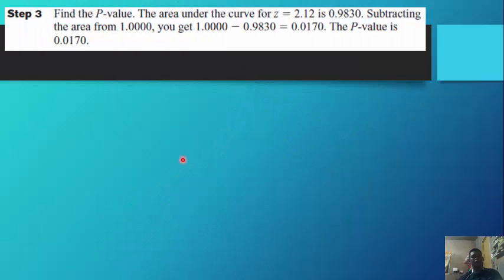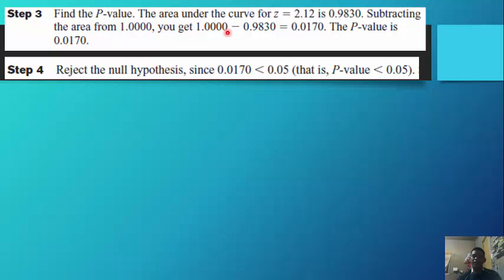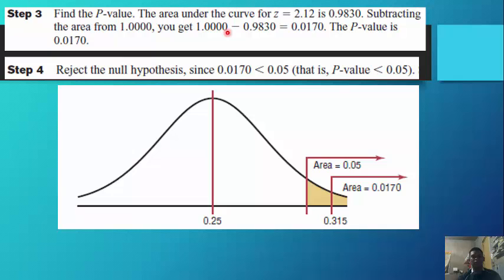Step 3: Find the p-value. The area under the curve for z equal to 2.12 is 0.9830. Subtracting from 1.00 gives 0.0170, so the p-value is 0.0170. Step 4: Reject the null hypothesis since 0.0170 is less than alpha of 0.05, that is p-value less than alpha.